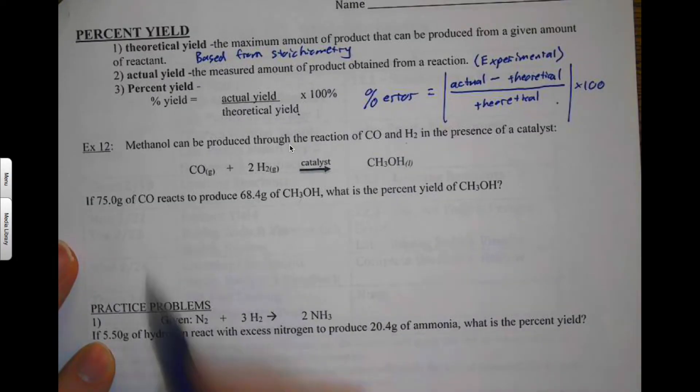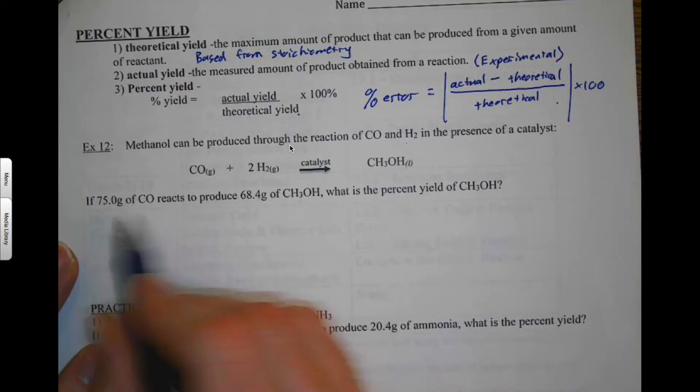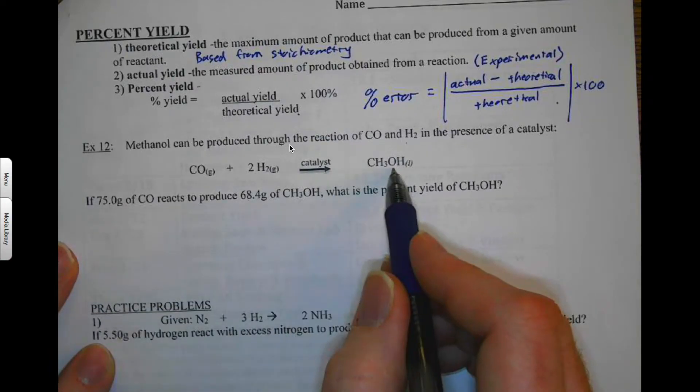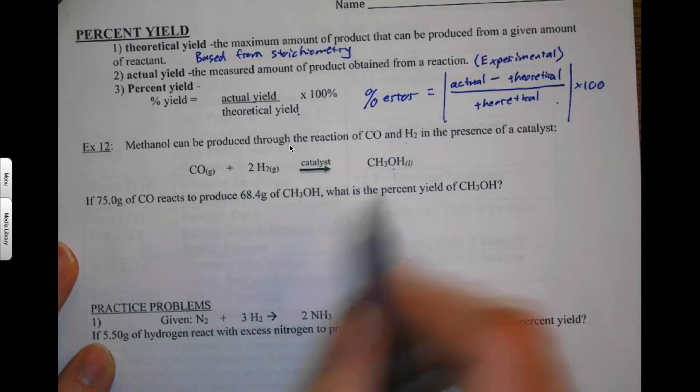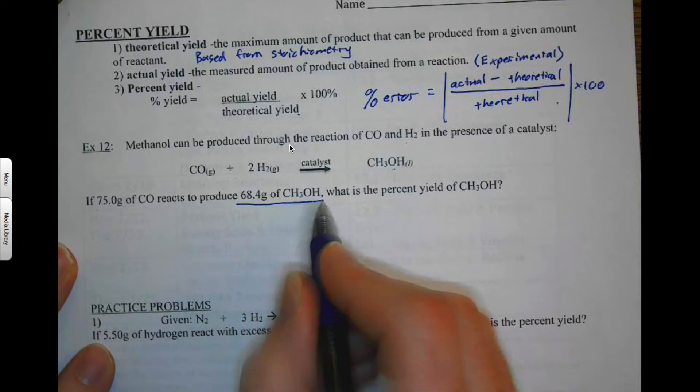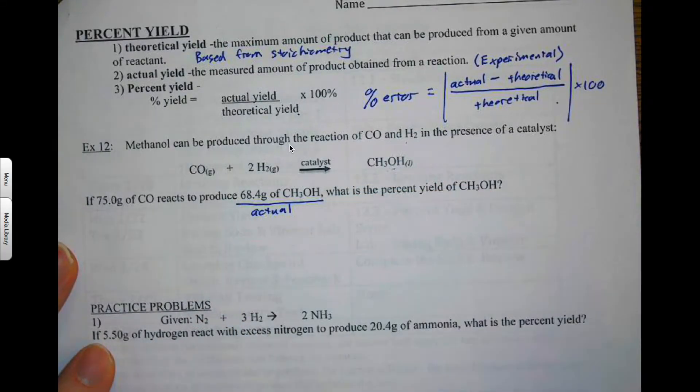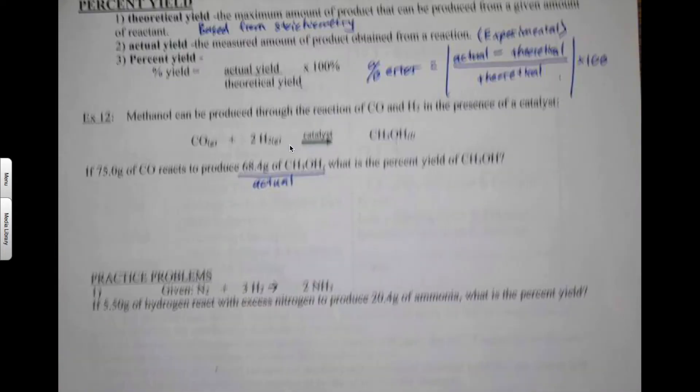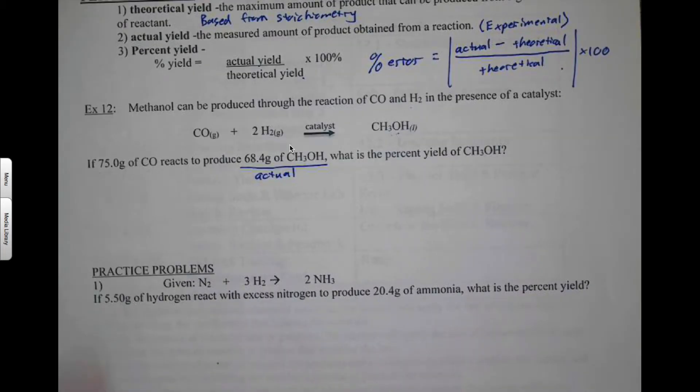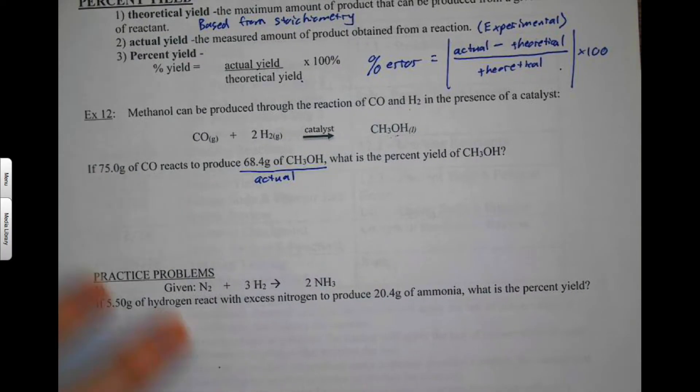Well, so here's your starting material right here, and we can calculate our theoretical yield here. Now this guy right here is your actual yield. So actual yields are given to you in a problem if it's a word problem. They're always given to you. You don't actually have to go and find them or look them up.